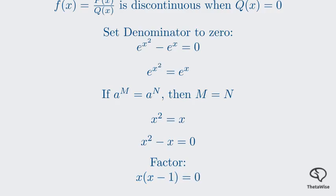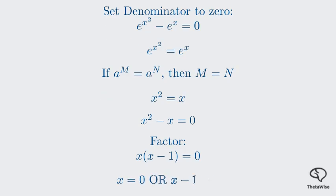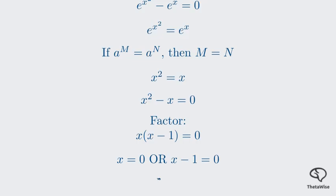This leaves us with x times the quantity x minus 1 all equal to 0. For the product of two factors to be 0, at least one of the factors must be 0. This gives us two possibilities. First, the factor x can be 0. This gives us our first solution: x equals 0. Second, the factor x minus 1 can be 0. Adding 1 to both sides gives us our second solution: x equals 1. These two values, x equals 0 and x equals 1, are the points where the function f(x) is discontinuous because they make the denominator 0.